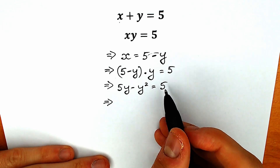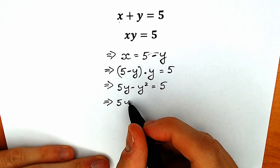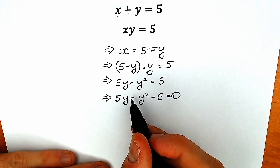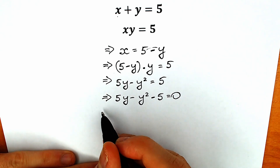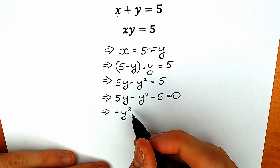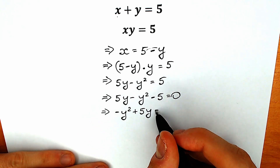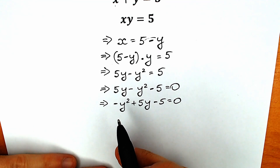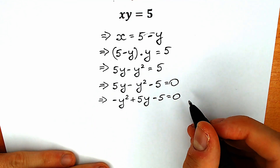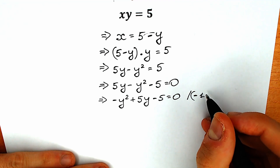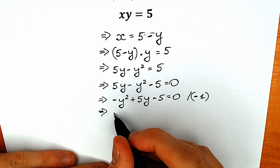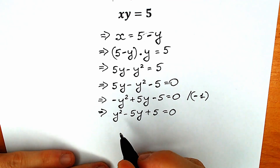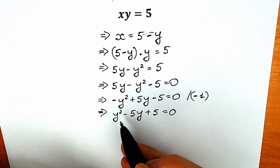Let's move the 5 from the right side to the left side, so we have 5y minus y squared minus 5 equals 0. Now let's reorder: minus y squared plus 5y minus 5 equals 0. The final step — multiply both sides by minus 1, because we prefer a positive leading coefficient. So we get y squared minus 5y plus 5 equals 0. This is our quadratic equation.